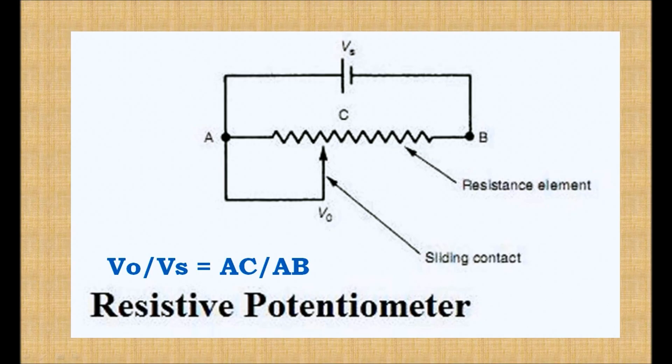Since these potentiometers work on the principle of resistance, they are also called resistive potentiometers. As per the resistance law of the conductor, the resistance of the conductor AC changes as the length of the wire AC changes. Accordingly, the output voltage VO between A and C also changes.